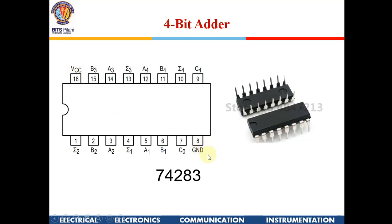The chip can take two 4-bit inputs. The first set of inputs will be A1, A2, A3, and A4, located at pin numbers 5, 3, 14, and 12 respectively. It can also take a carry-in — here it is on pin number 7, written as C0, where C0 indicates carry-in.